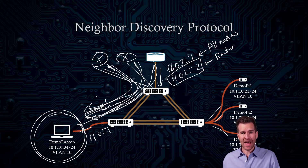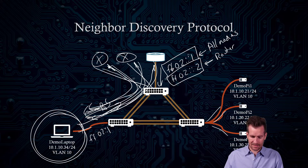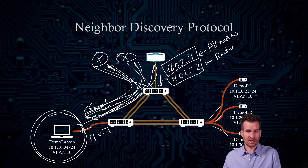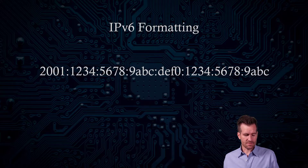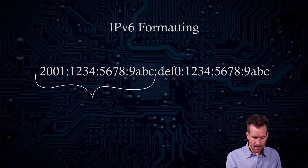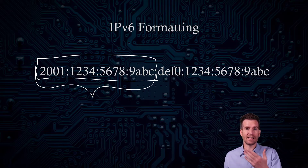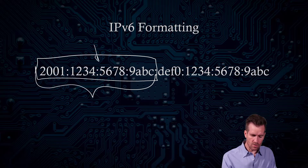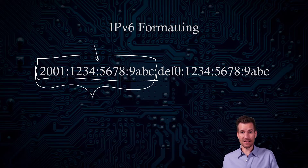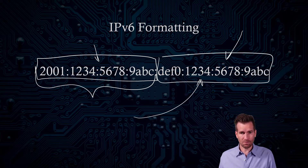When the router advertisements get sent back, they are sent back to FF02::1, so they go out to all devices on the network. The router advertisement contains information such as the network it's a part of and the router's own address, so the client machine knows the address of the default gateway. Now that the client knows the network portion, and it sees that the auto-configuration flag is turned on — meaning SLAAC is operating — it needs to generate the host bits side of the address, and it needs to generate something that no other machine on the network has.